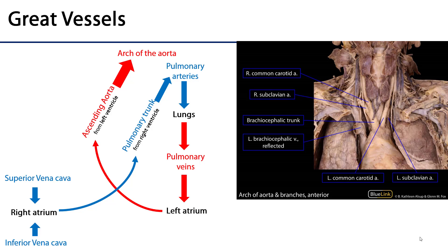The great vessels of the heart refer to any vein or artery that is connecting to the heart. Veins conduct blood back to the heart; arteries conduct blood away from the heart. In this particular photograph, we can see the superior portion of the heart contained within the pericardium, with the lungs lateral to the heart. Here is the ascending aorta going into the arch of the aorta, going into the descending aorta, and here are some of the branches of the arch of the aorta. We can also see that the venous supply of the anterior thoracic has been cut.